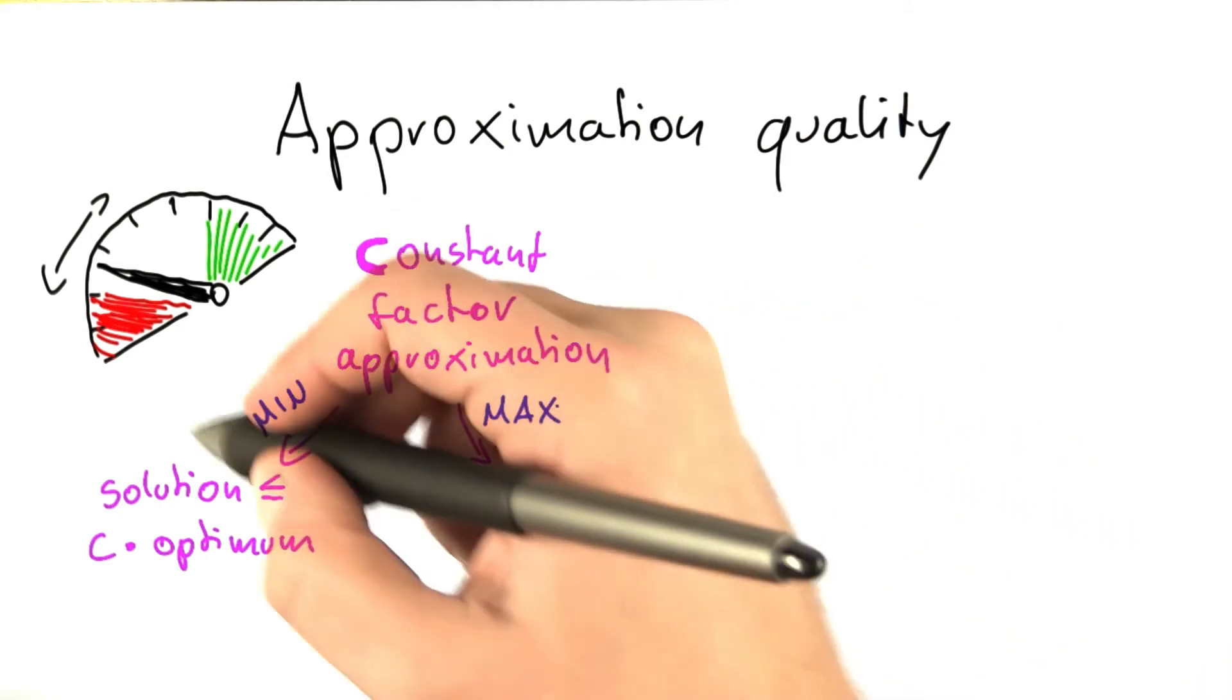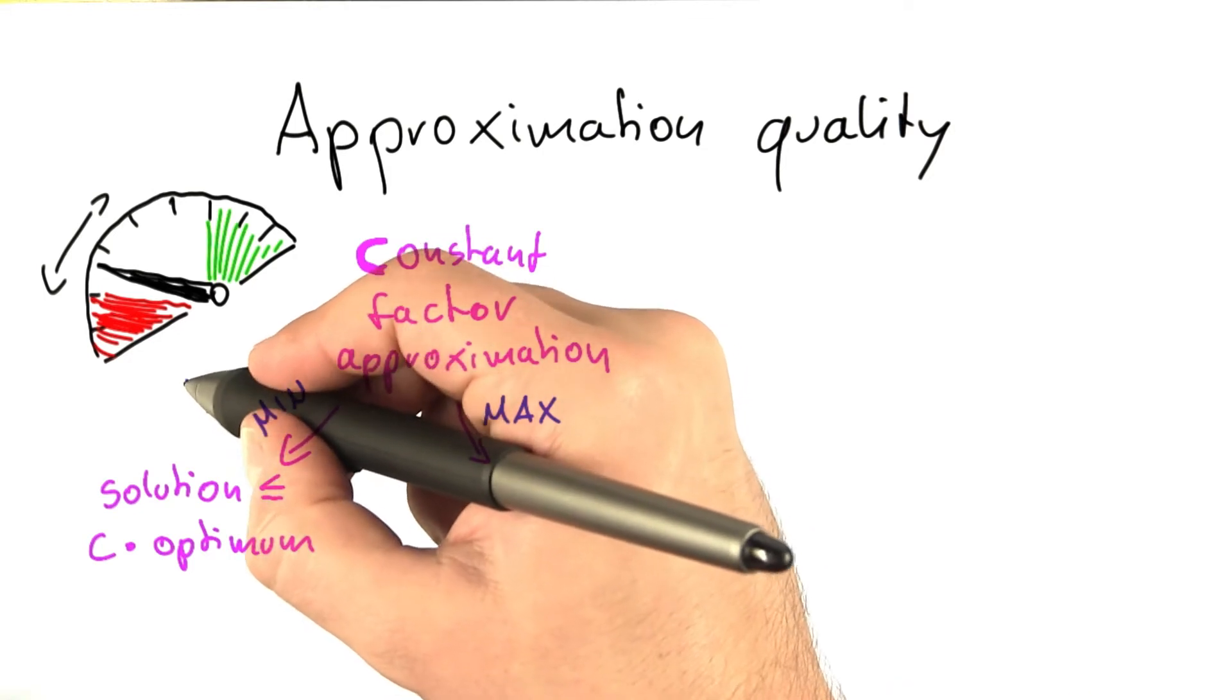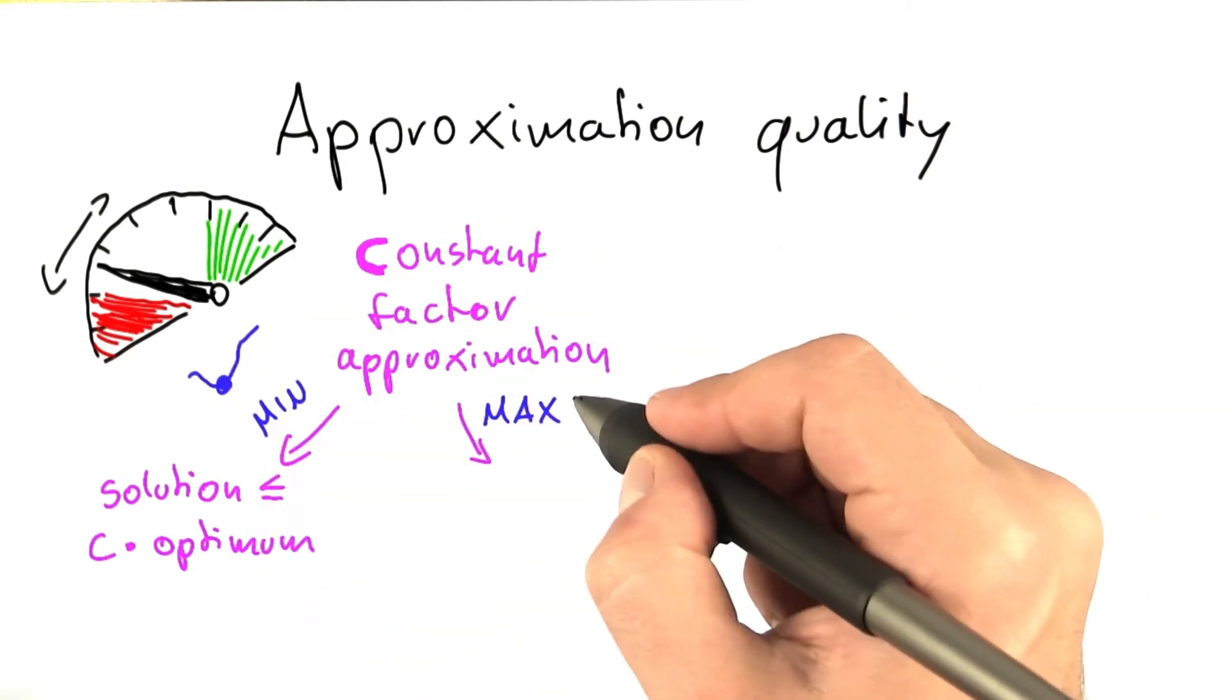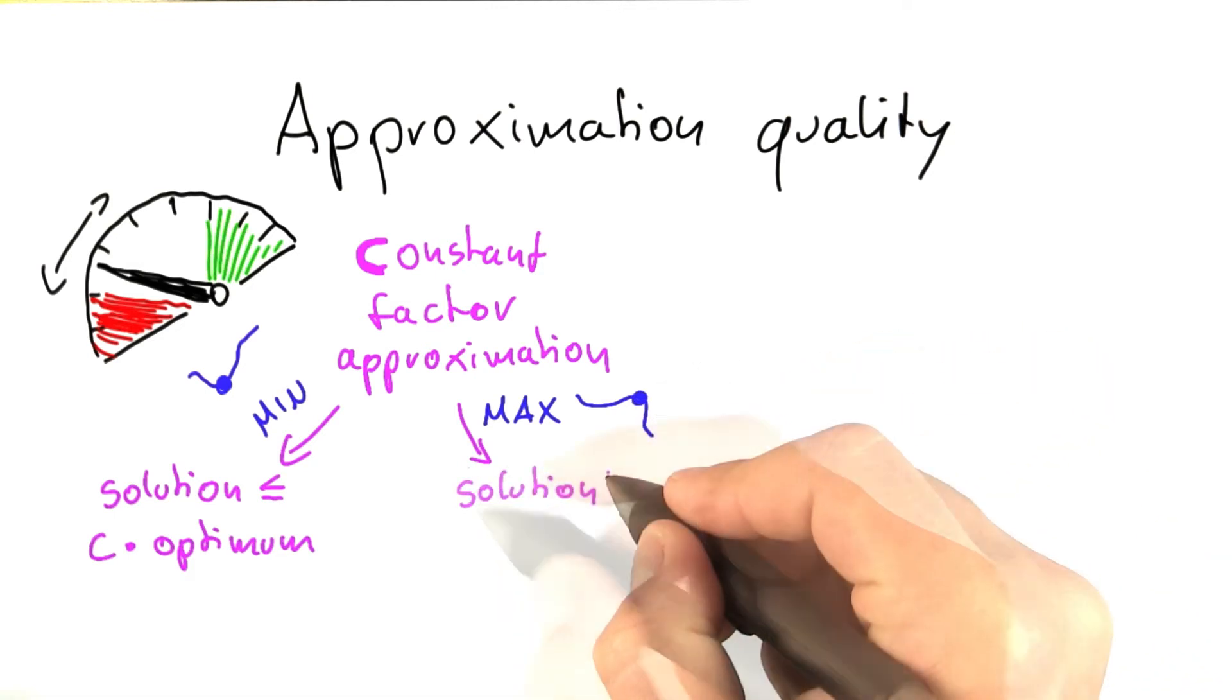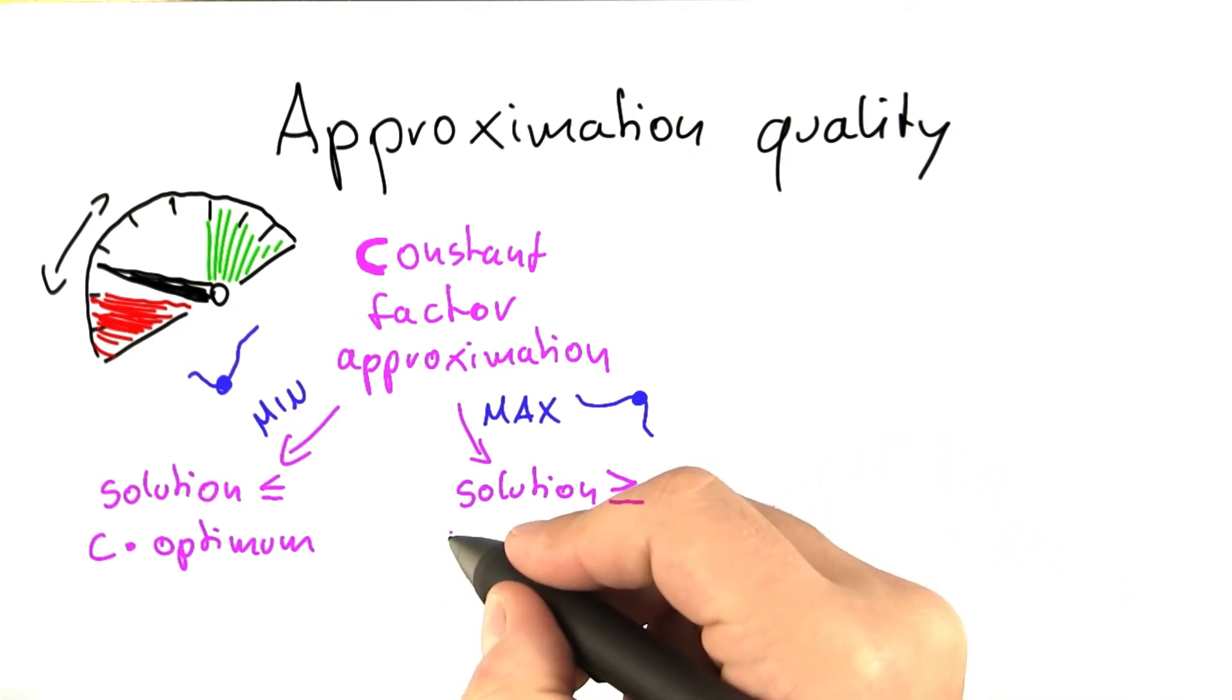So this is for minimization. And for maximization, so minimization problem, you're trying to find this point here. For a maximization problem, you're trying to find this point here, basically, your solution is at least as good as 1 over c times the optimum.